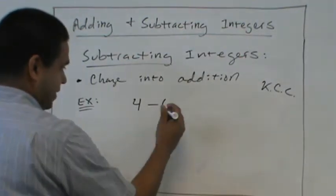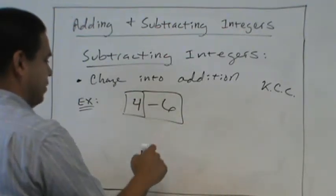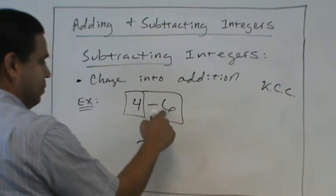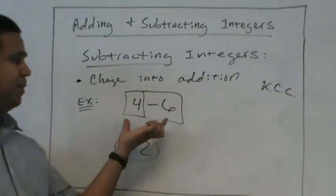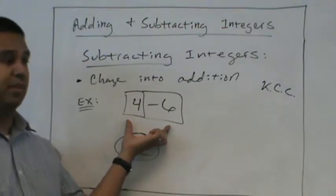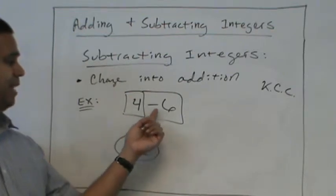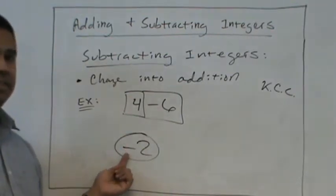When it's subtraction, we can just put boxes around these guys and see. They're different signs, so we subtract. That's bigger. It's negative. Okay? So the box method works also. You would box that operation with this, and that becomes your sign. So you have positive, negative, different signs. Subtract. That one's bigger. It's negative.